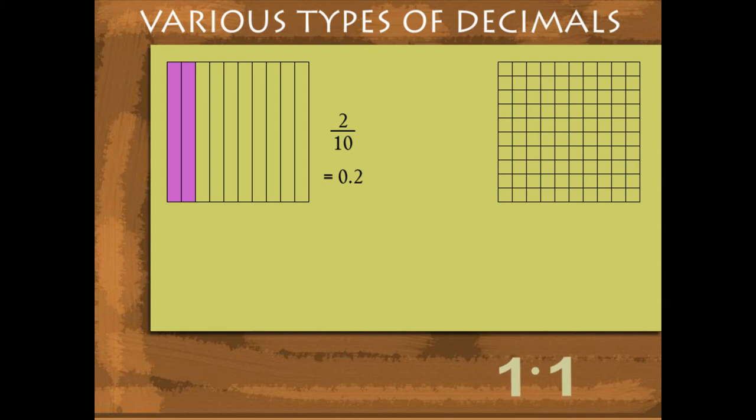In the other figure, if you select two columns, it means 20 squares out of 100 and the fraction is 2 upon 100. The decimal is 0.20.